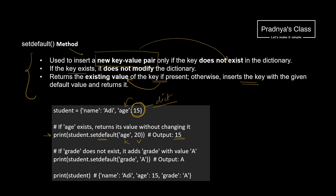But what if the key doesn't exist? Then this key-value pair will get added to the dictionary and the value will get printed. When we print the dictionary, that key-value pair got inserted. But for the other key-value pair where the key already existed, there is no change in the dictionary. So that was about setDefault — it will add the key-value pair only if the key doesn't exist.